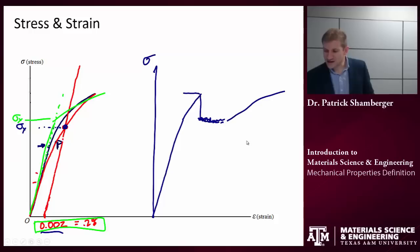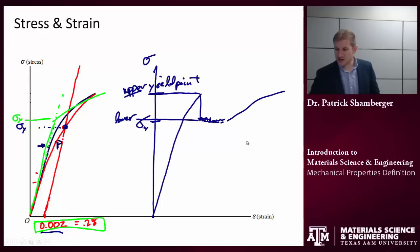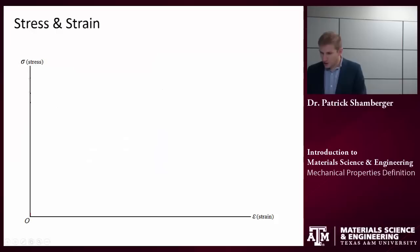So, if I see this kind of behavior, this is usually called the upper yield point and the lower yield point. And usually, if I were to pick a yield stress for this material, I would pick that lower yield point. Because once it goes past this upper yield point, this is now the new yield stress of the material. This is a behavior we don't see in all materials, but it's something I would like you to be familiar with.